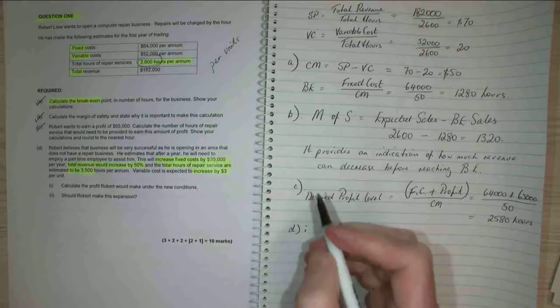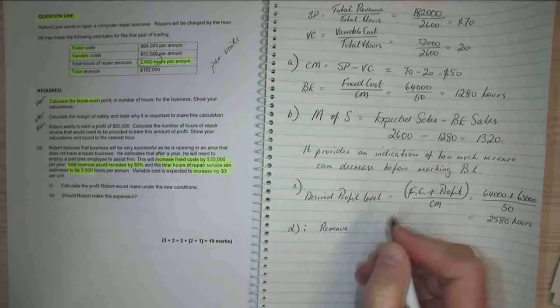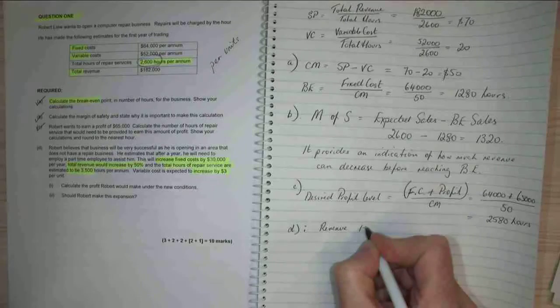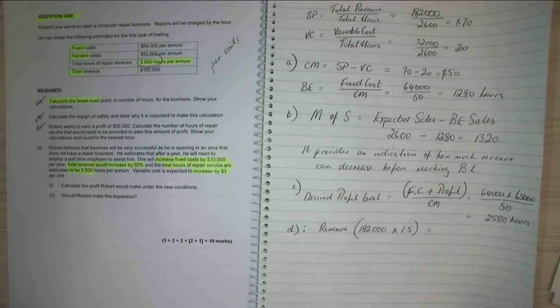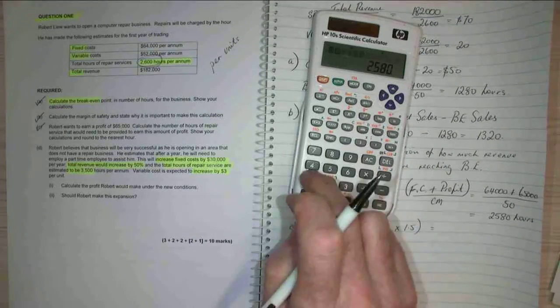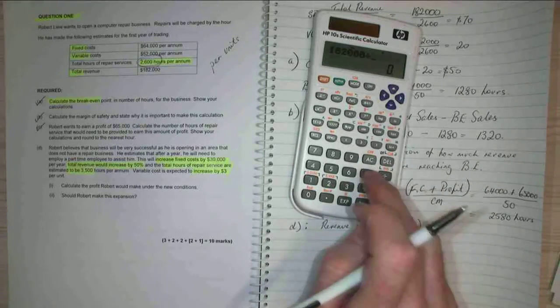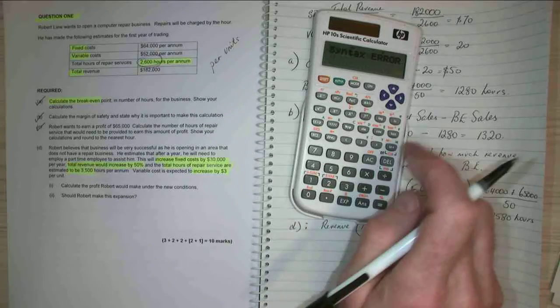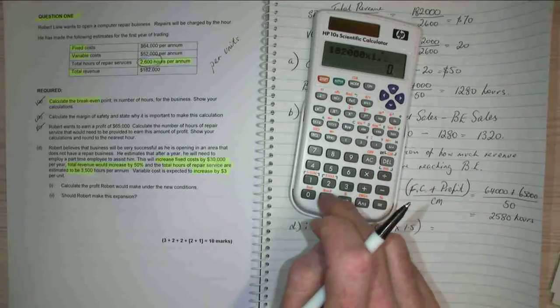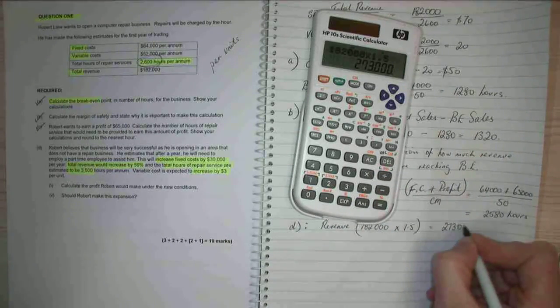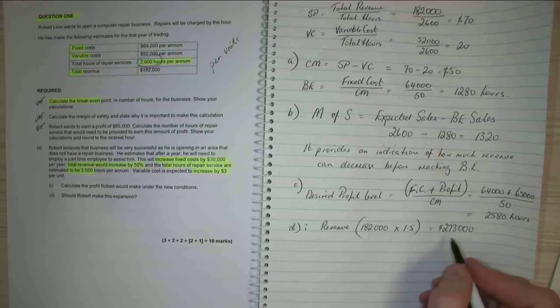Now to calculate profit first we need to calculate new revenue. So revenue is $182,000 times 1.5 equals $273,000. So that's my new revenue.